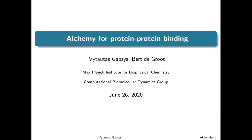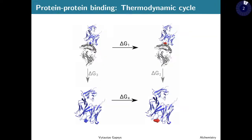Hello everyone. This is the short talk, and in this short talk, as I already mentioned in the previous longer talk, I will mainly concentrate on the protein-protein binding and the applications of the alchemical calculations for the calculation of relative free energy differences upon amino acid mutation in the context of protein-protein binding. For that, we will use exactly the same methodology: mainly GROMACS-based MD sampling and PMX for the setup of these calculations.